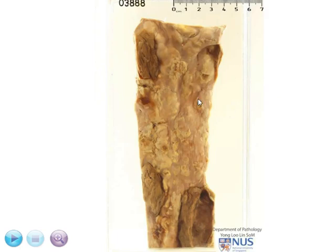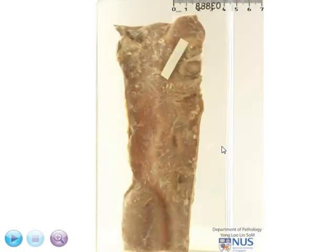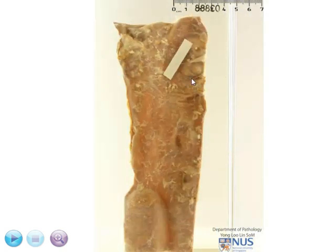This is a specimen of the abdominal aorta, and we're looking at the inner or the luminal surface here. When I turn it around, this would be the adventitial surface.